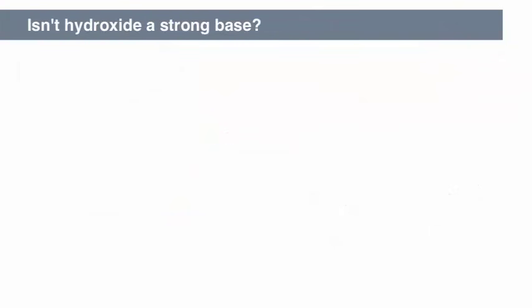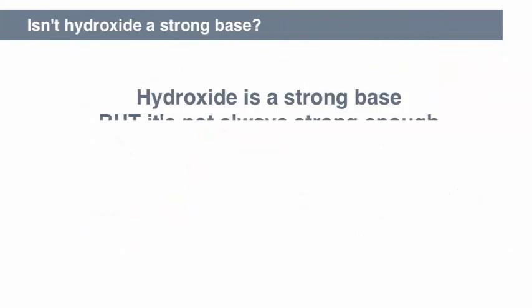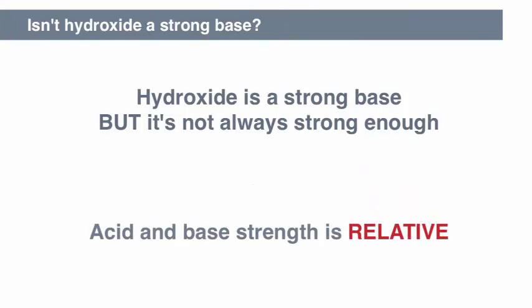This example brings up a common error. We often learn that hydroxide is a strong base, and it is. But it is not strong enough in all situations, like this one. Keep in mind that acid-base chemistry is relative. It is the relative strength of the reacting partners that will determine the outcome of the reaction.